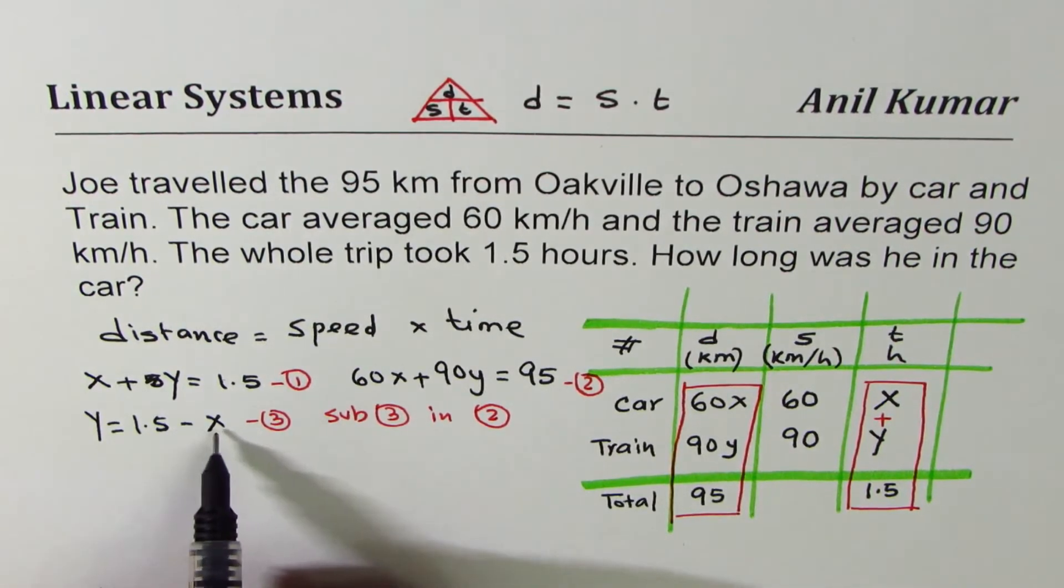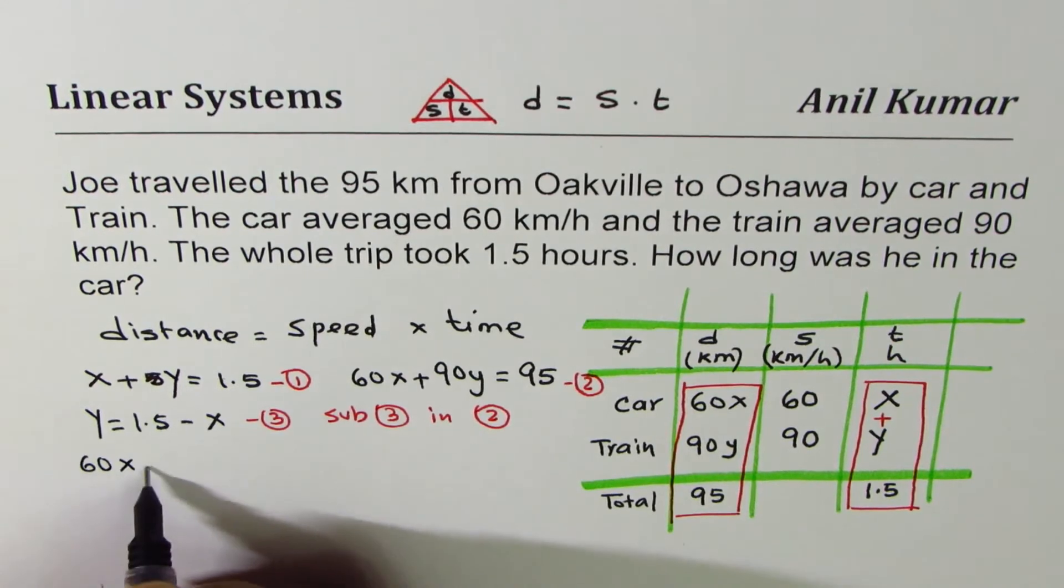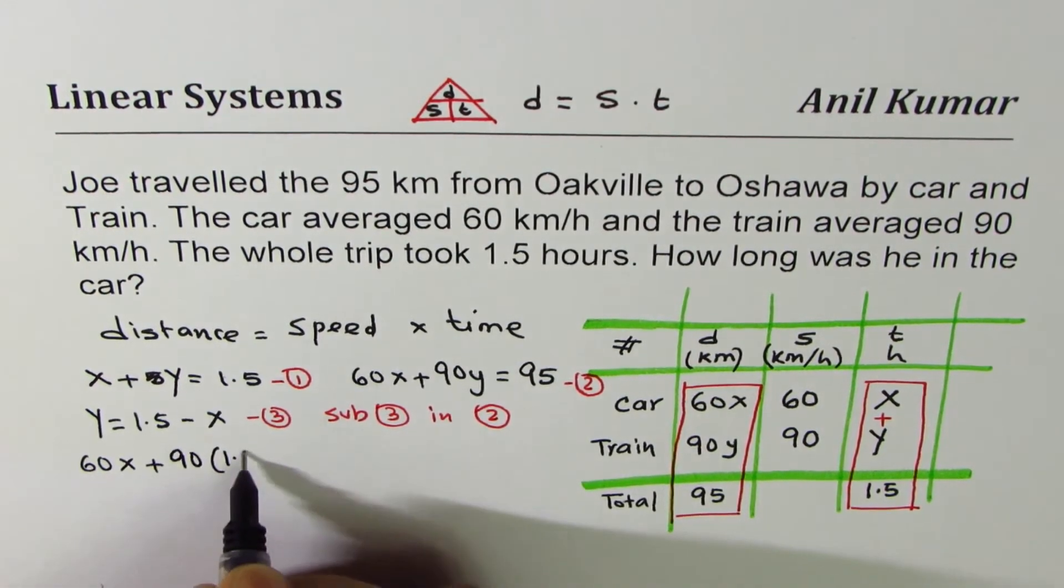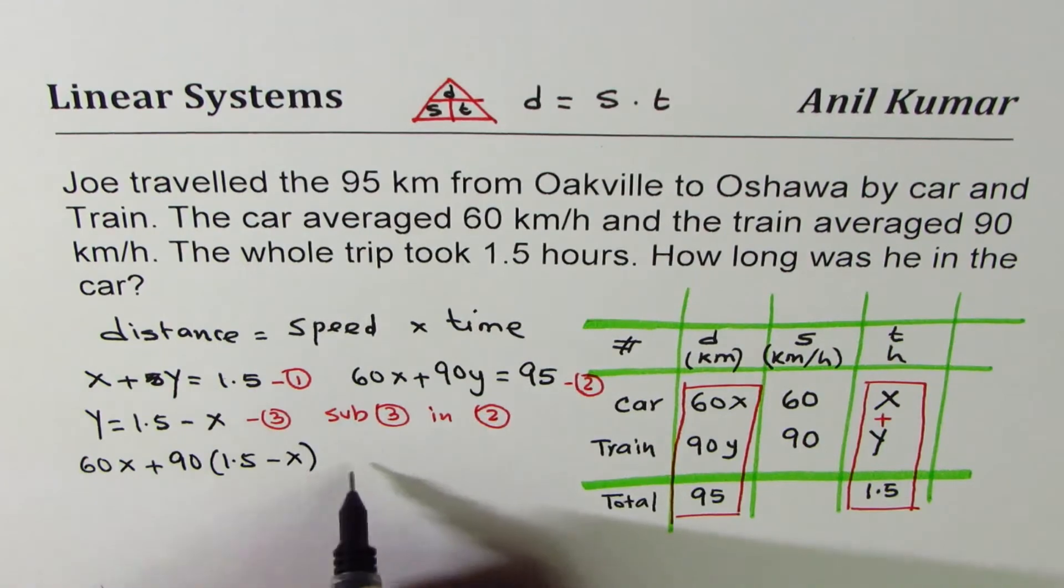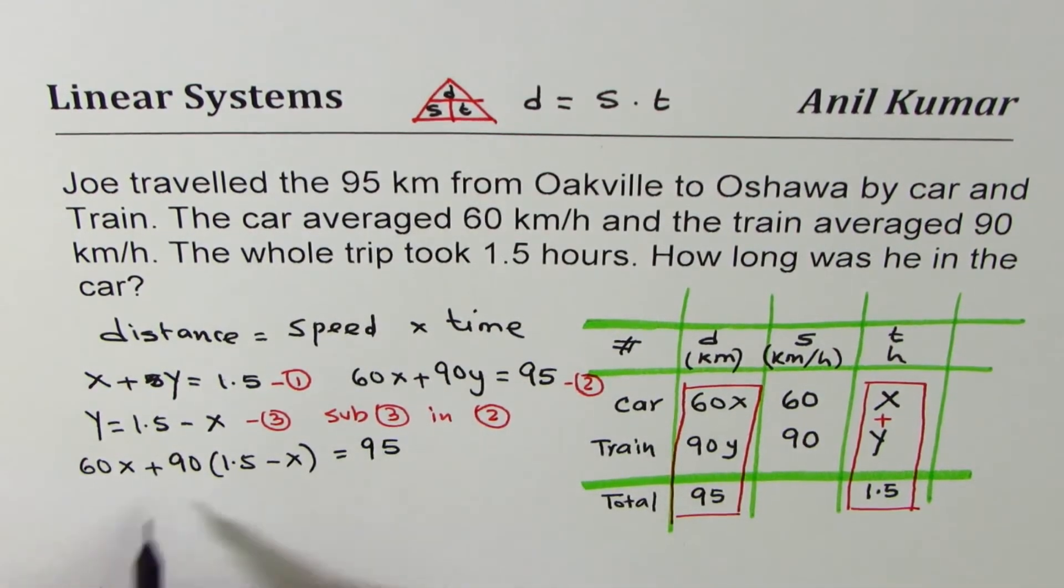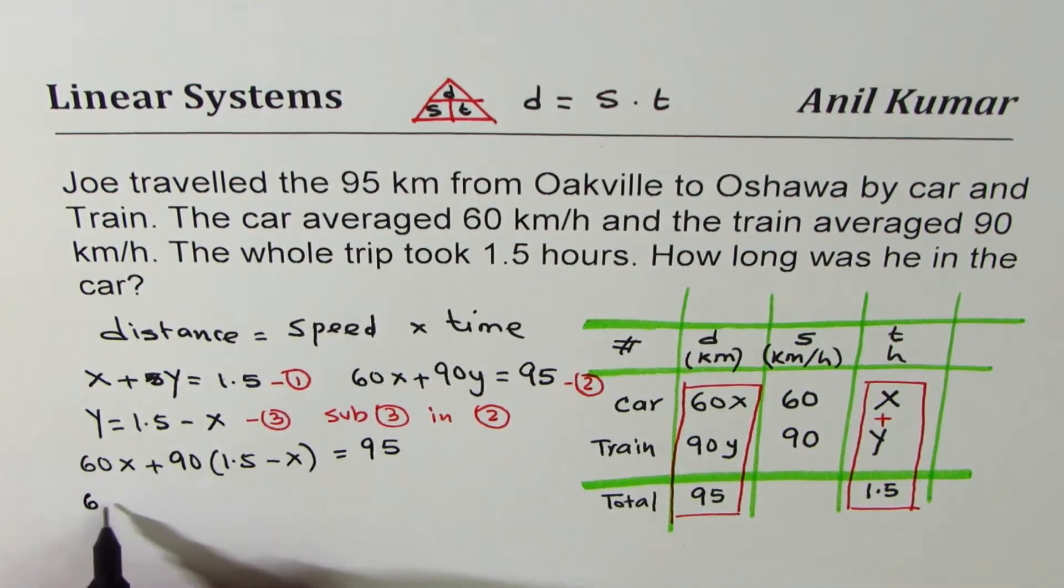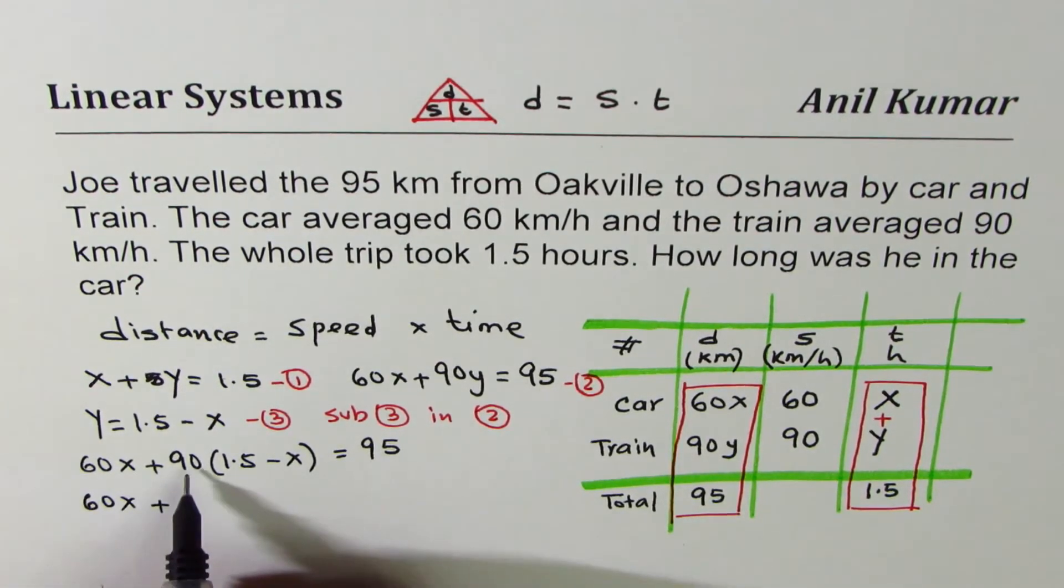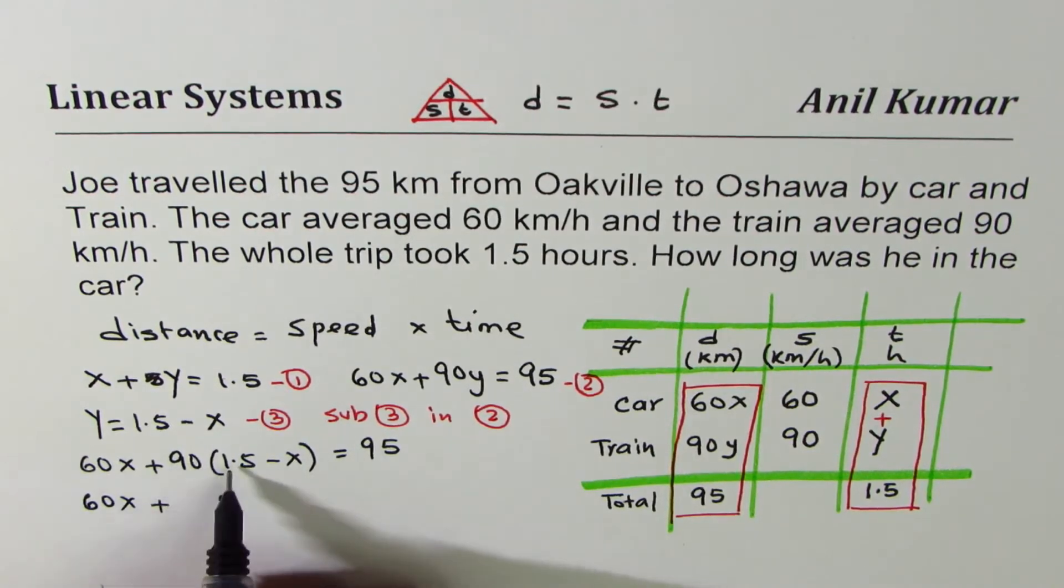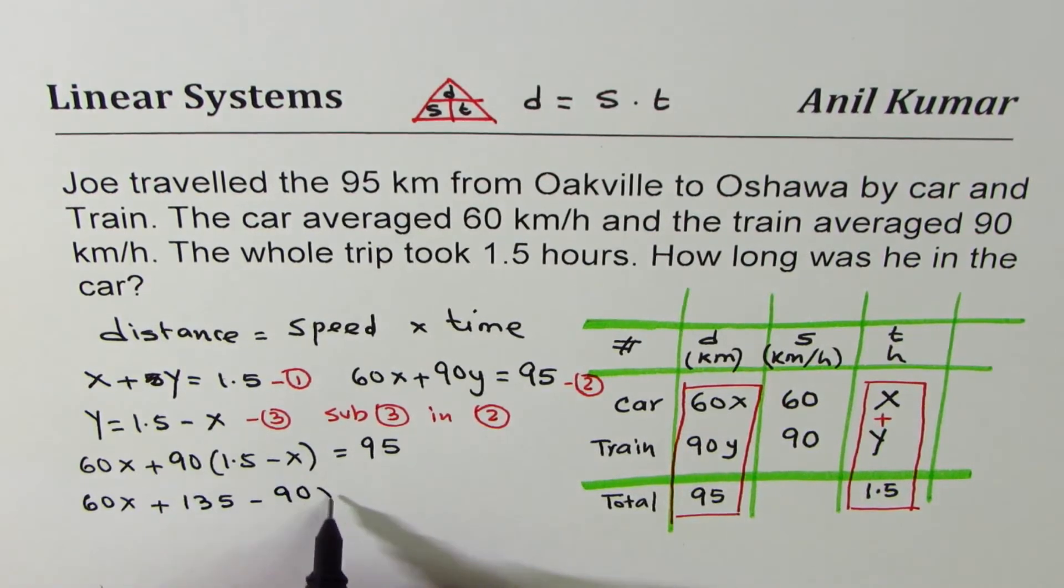So if I substitute 1.5 minus x as y here, I get 60x plus 90 times 1.5 minus x equals to 95. Open the bracket, 60x plus, so we can multiply 90 by 1.5. You can use a calculator. 9 times 15 is 135, minus 90x equals to 95.